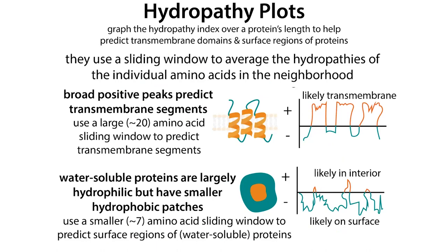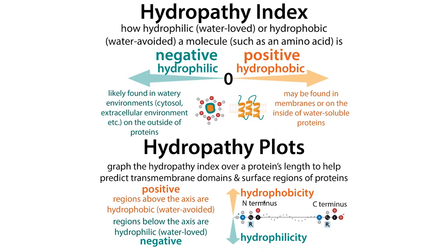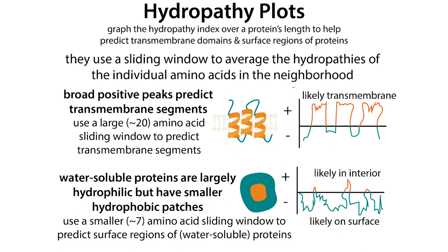For a hydropathy plot, we're going to be looking over the length of a protein, going from the N-terminus - the starting end - to the C-terminus - the ending end. We're going to take a sliding window, taking the average of amino acids in a window and going over the course of the protein. This balances out some of the noise. If you were to just plot the individual hydropathy index for each amino acid without any averaging, you'd get something really, really noisy.